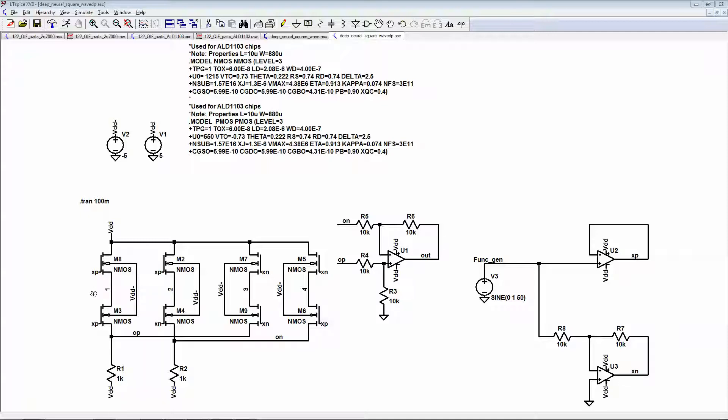Rather than a multiplier, now it's a squarer, and you just have XP XP, XN XN, XP XN, XN XP. Then you have that differential. Now I'm just gonna test with a sine wave from the function generator.